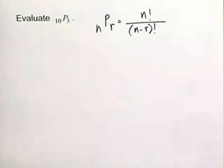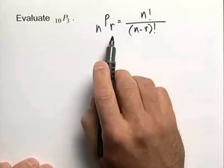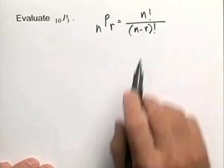We have our permutation formula here. The permutation of n things taken r at a time is equal to n factorial all over n minus r factorial.